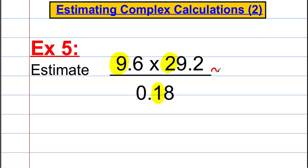Those were the digits that represented the first significant figure. And so that approximates to 10 multiplied by 30, all of that divided by 0.2, which is actually equal to 300 divided by 0.2.